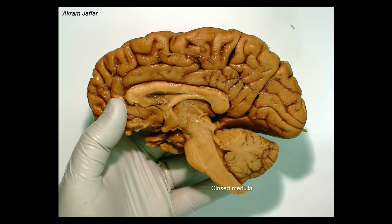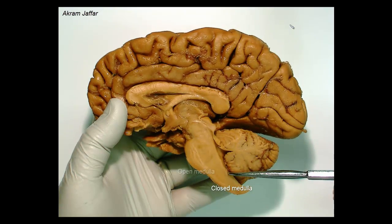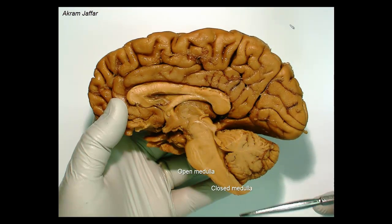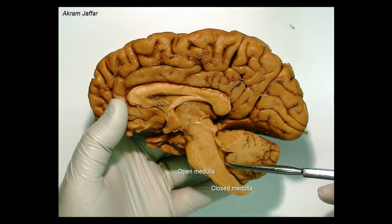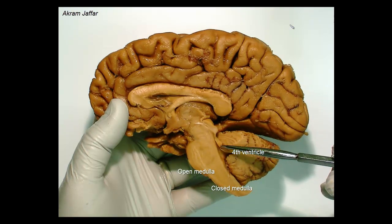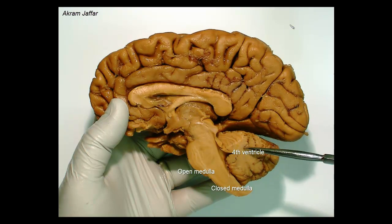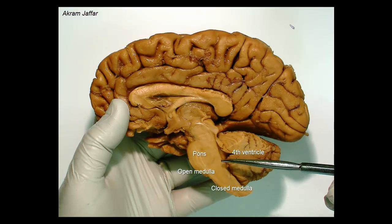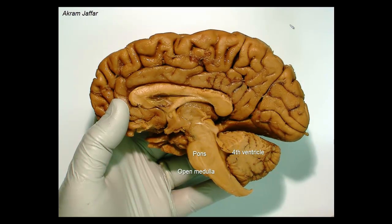That is why it is called the closed part of the medulla. The upper part of the medulla is open in the sense that it does not contain a central canal, but posteriorly it opens to form part of the floor of the fourth ventricle. This is the fourth ventricle of the brain that is roofed by the cerebellum. The floor is formed by the pons and the upper part of the medulla oblongata, which is the open part of the medulla oblongata.